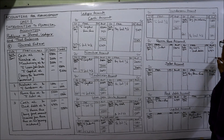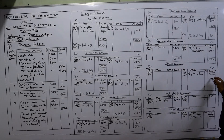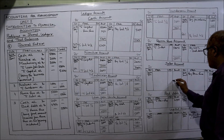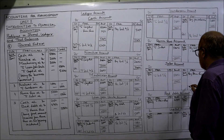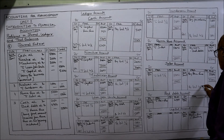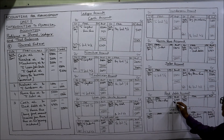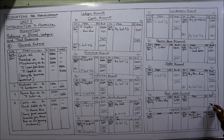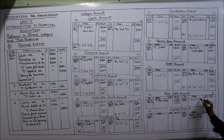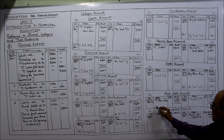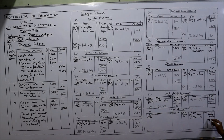Rama Rao account is closed: debit side 5000, credit side also 5000 — no balance at all. Sales account: credit side 5000, nothing on debit side — balance carried down 5000, balance brought down 5000, February 1st. Bad debts account: debit side only 4750 — balance carried down 4750, balance brought down 4750, February 1st.